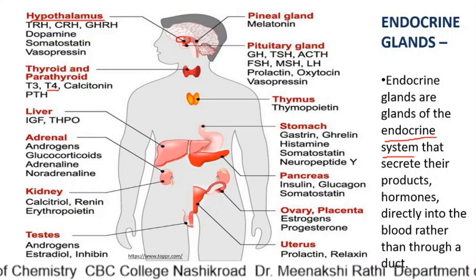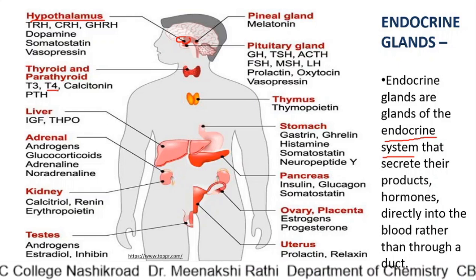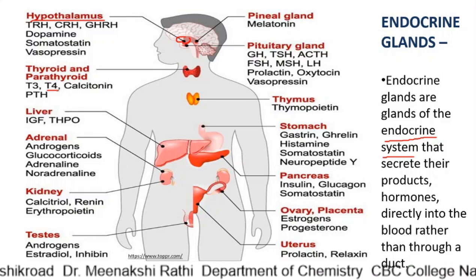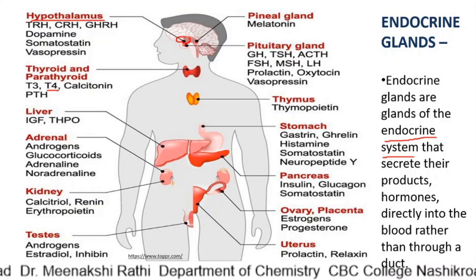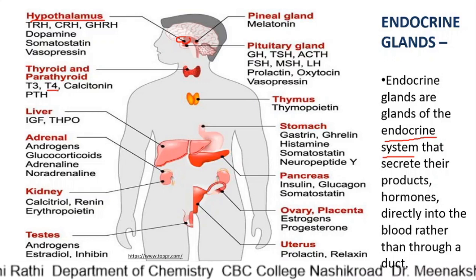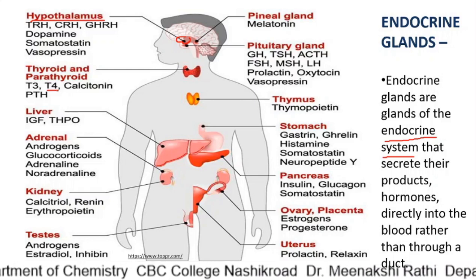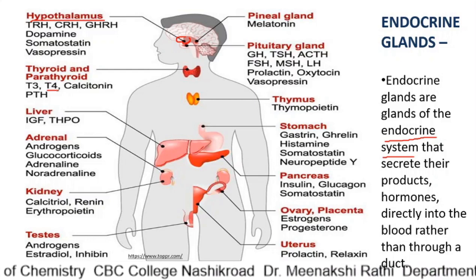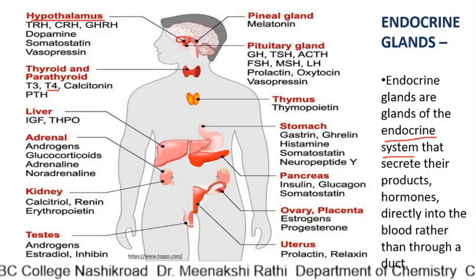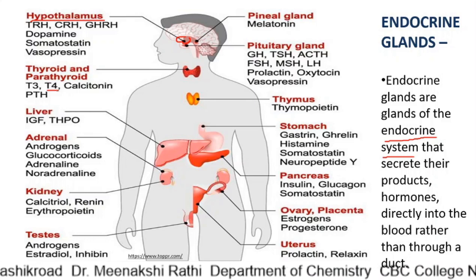Goiter is a disorder caused by enlargement of the thyroid gland and is mainly due to iodine deficiency in the diet. You may have seen a big lump produced near the throat or neck — that is called goiter.